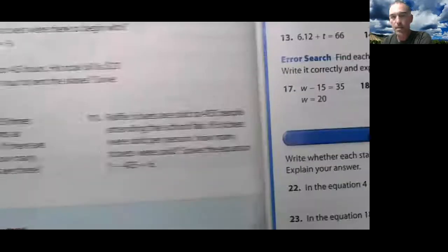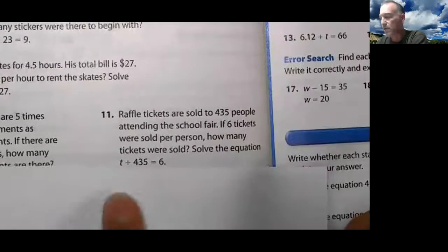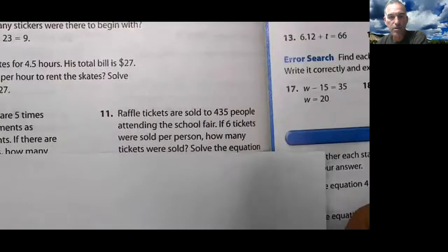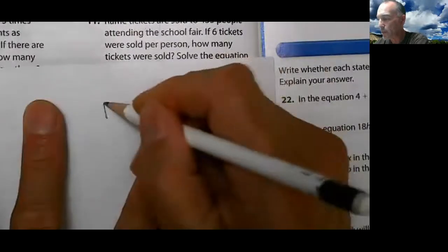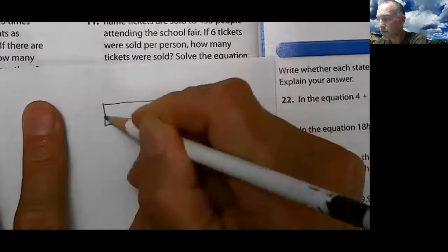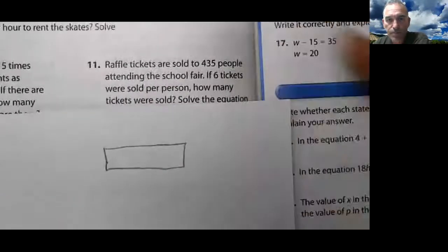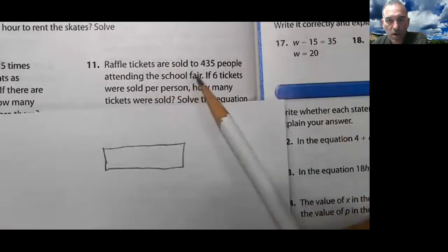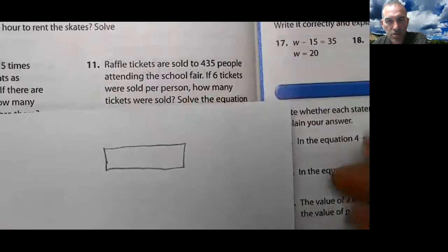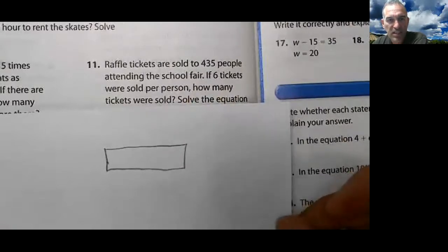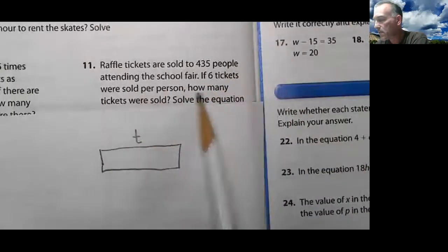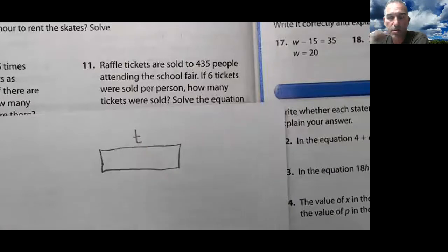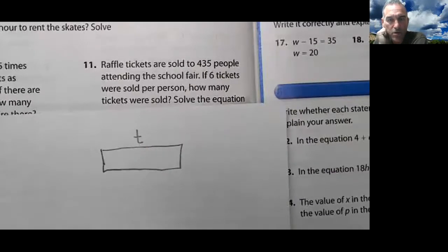Let's do the last one. Hopefully you've tried it already. This last one. They're telling you try it that way. Let's try three ways to solve this. Ready? Last one. I draw a unit bar. It's crooked. And it reads, Raffle tickets are sold to 435 people attending the school fair. If six tickets were sold per person, how many tickets were sold? So they're asking me for the total. So right away, it says what? How many tickets were sold? I don't know. So I don't know the total.